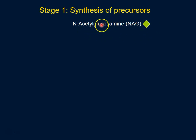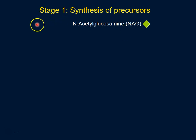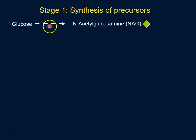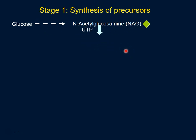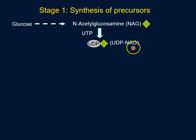Glucose by multiple steps is converted to NAG. NAG is then converted to UDP-NAG, where a molecule of UTP is used to form UDP-NAG. UDP-NAG is then converted to UDP-NAM, which is the second sugar that we're going to use.